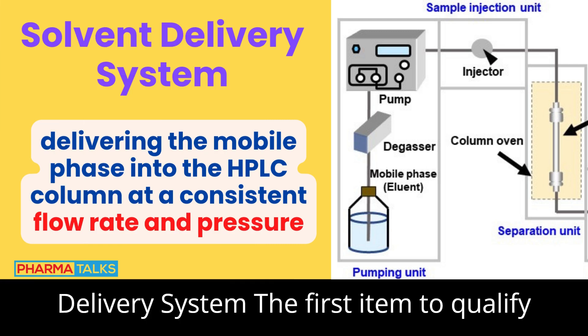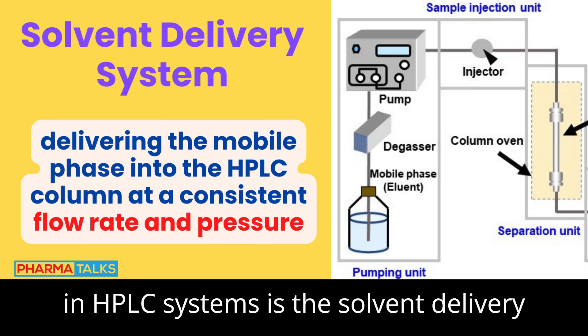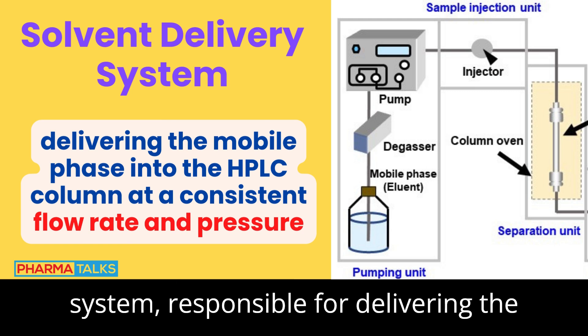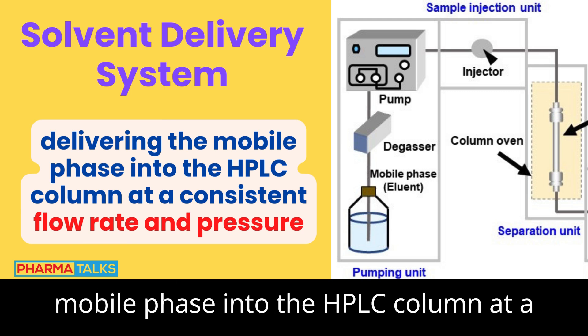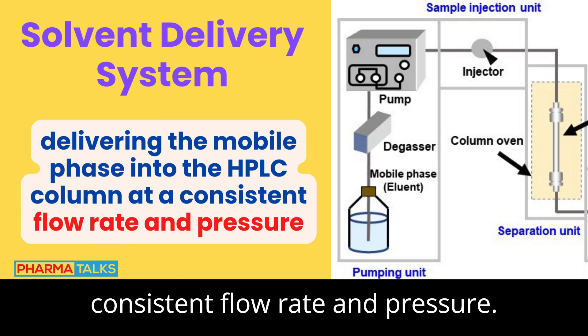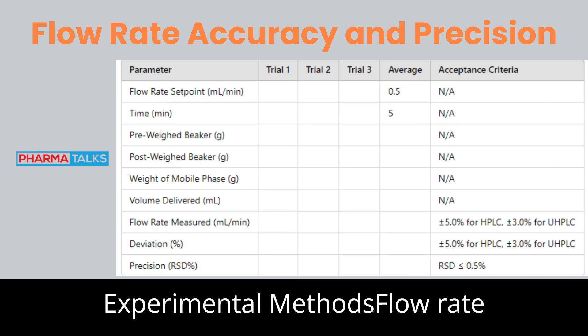1. Solvent Delivery System. The first item to qualify in HPLC systems is the solvent delivery system, responsible for delivering the mobile phase into the HPLC column at a consistent flow rate and pressure.